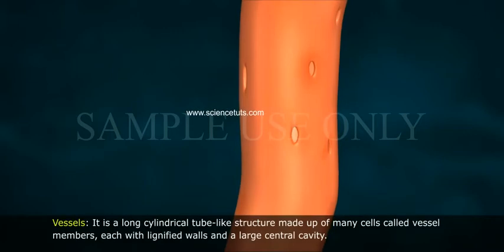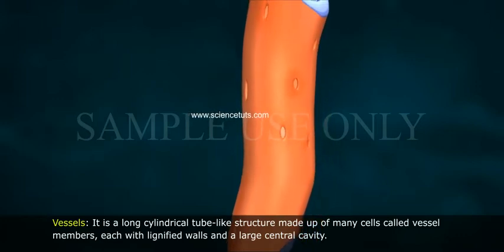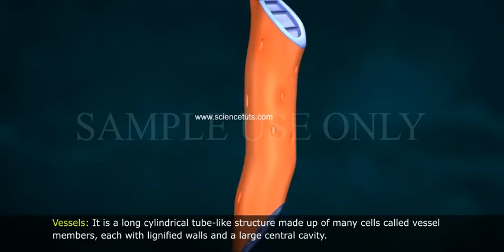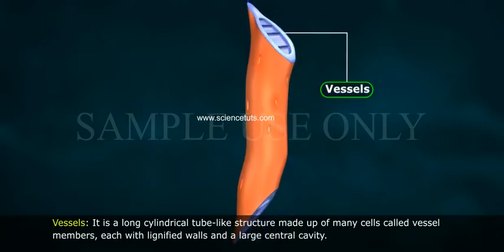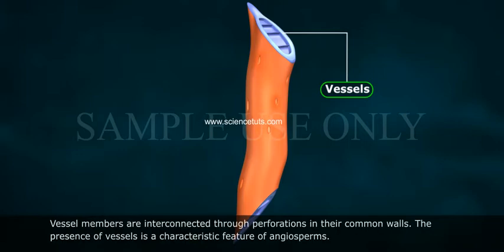Vessels: It is a long cylindrical tube-like structure made up of many cells called vessel members, each with lignified walls and a large central cavity. The vessel cells are also devoid of protoplasm. Vessel members are interconnected through perforations in their common walls. The presence of vessels is a characteristic feature of angiosperms.